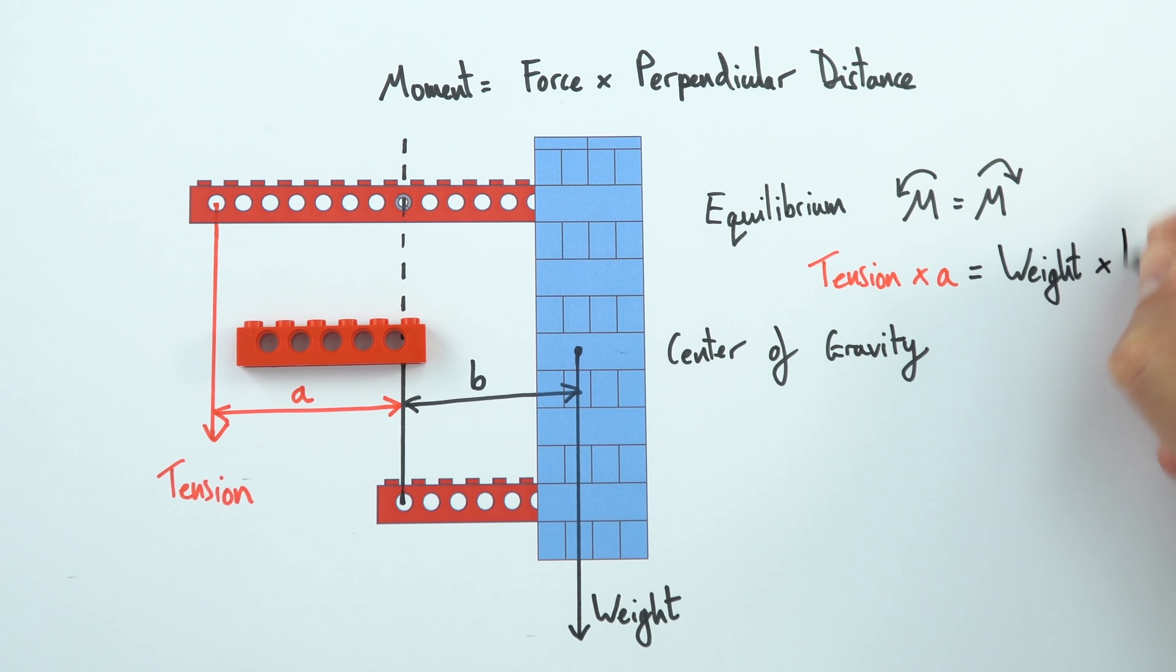times distance b. And provided we have the two moments equal to the same size, we have a structure which is then stable and appears to balance.